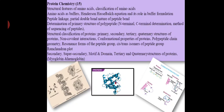Next is determination of the primary structure of a polypeptide — N-terminal and C-terminal determination and methods of sequencing peptides. For sequencing a polypeptide chain, we need to understand the N-terminal and C-terminal domains, how to sequence a particular protein, and what enzymes are required — such as trypsin, pepsin, chymotrypsin, carboxypeptidase, and aminopeptidase — along with the different methods used for sequencing.